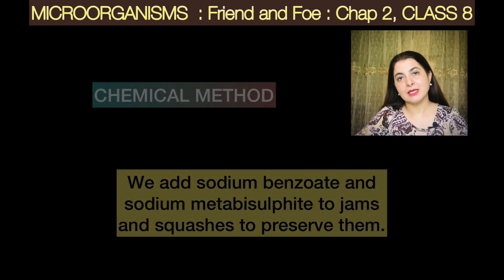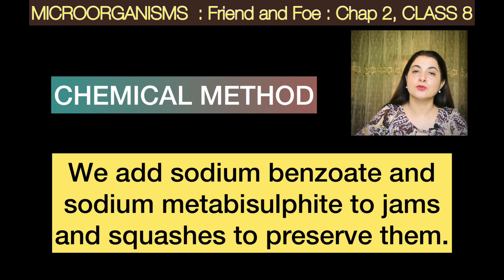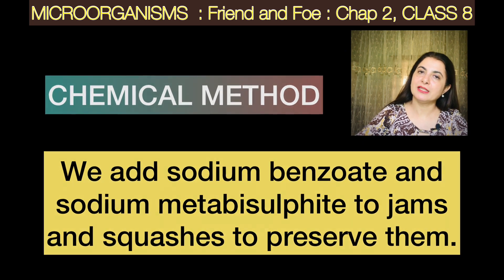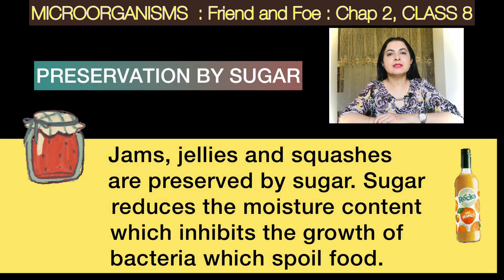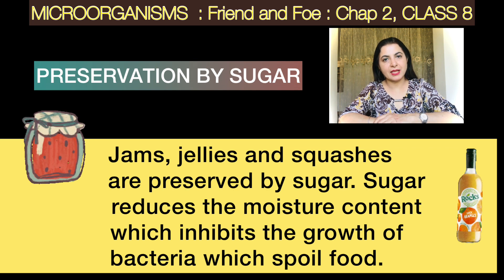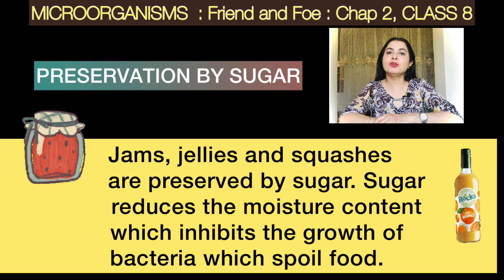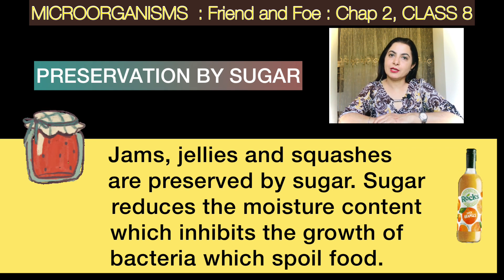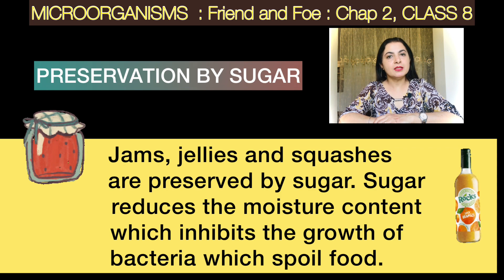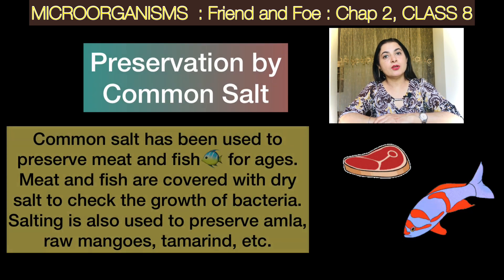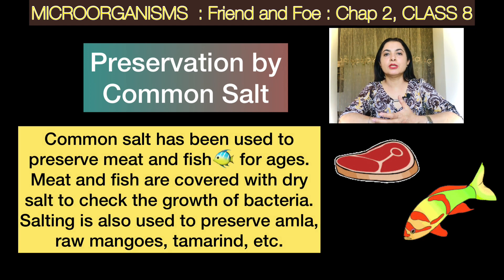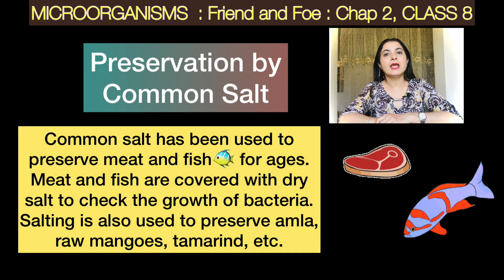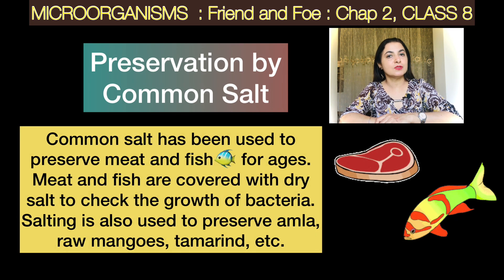The first is chemical treatment — certain chemicals like sodium benzoate and sodium metabisulfite are used and added to jams and other foods to preserve them and keep their quality intact. Next, we add sugar, which is a preservative. When added to any food substance, it reduces the moisture content, as a result of which bacteria cannot survive. Another method is adding salt — to preserve meat and fish products, they are covered with salt, which also does not allow bacteria to survive for long.